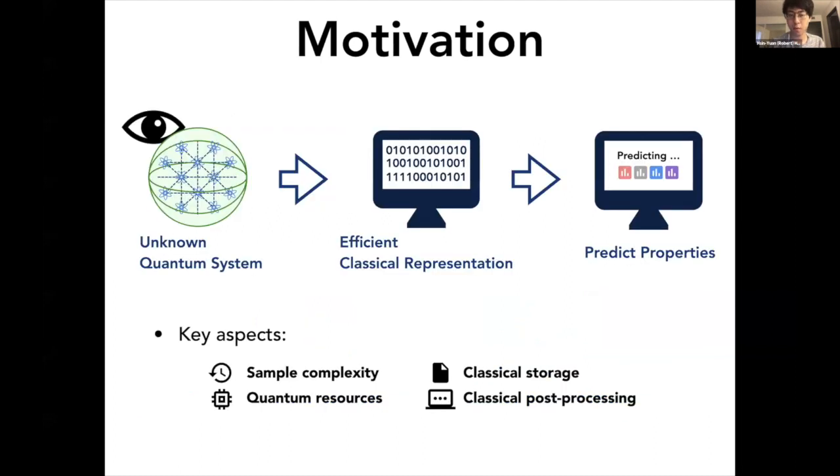Some of the key aspects for this task, similar to what Giacomo has talked about, includes sample complexity, which means how many copies of your quantum system you need to see in order to reconstruct this classical representation, as well as quantum resource, like how difficult it is to perform the quantum measurements of your quantum system, and also classical storage and post-processing on predicting the properties.